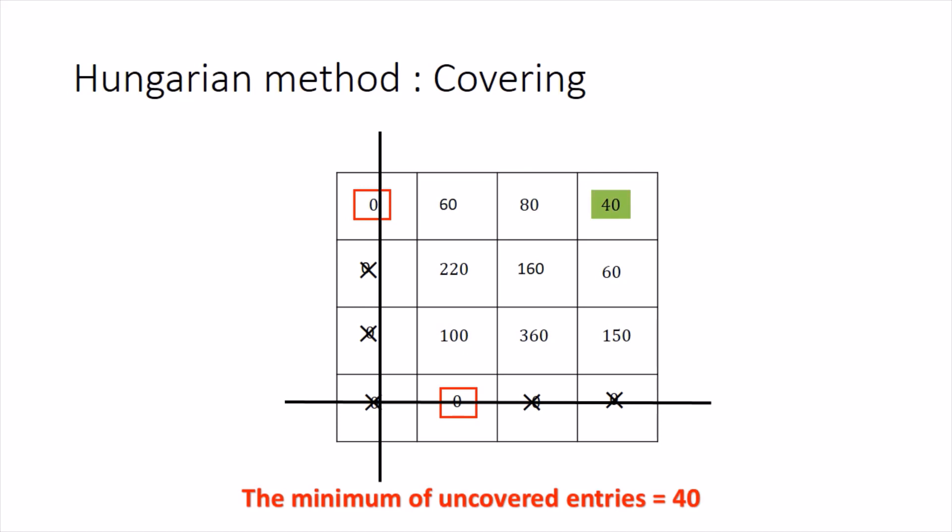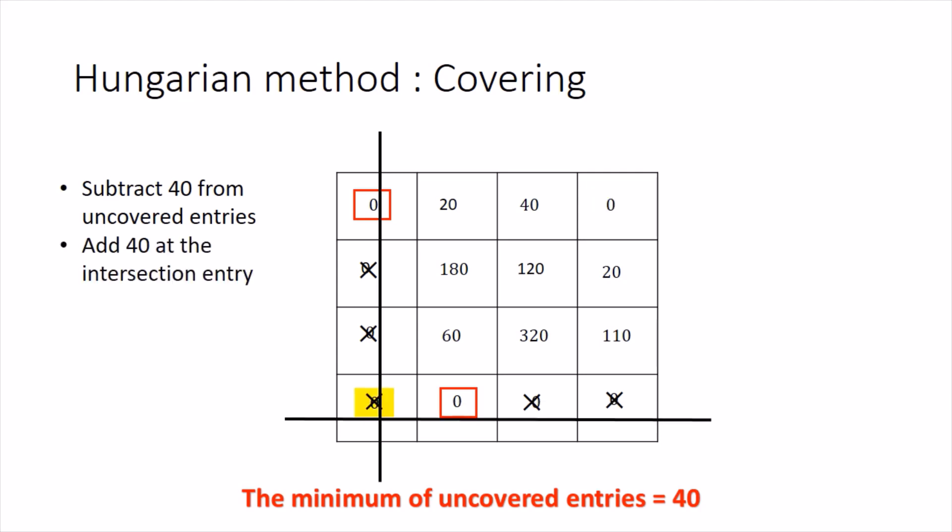From the uncovered entries, find the minimum value, which is 40 here. Subtract this 40 from all uncovered entries — 60, 80, 40, 220, 160, 60, 100, 360, and 150 — so you get a zero where 40 was written and the other entries are updated. Additionally, the entry lying at the intersection of the horizontal and vertical covering lines must be increased by 40; since it is zero, it becomes 40.